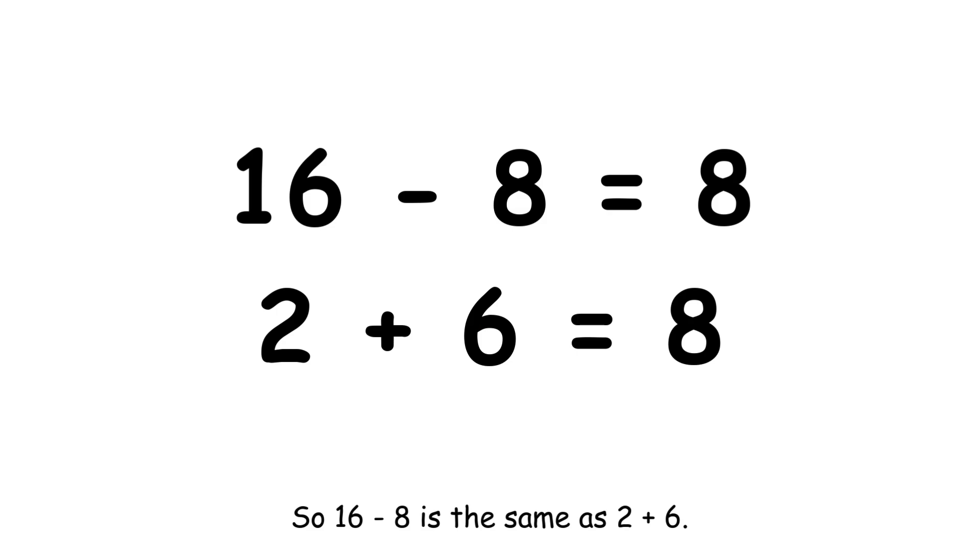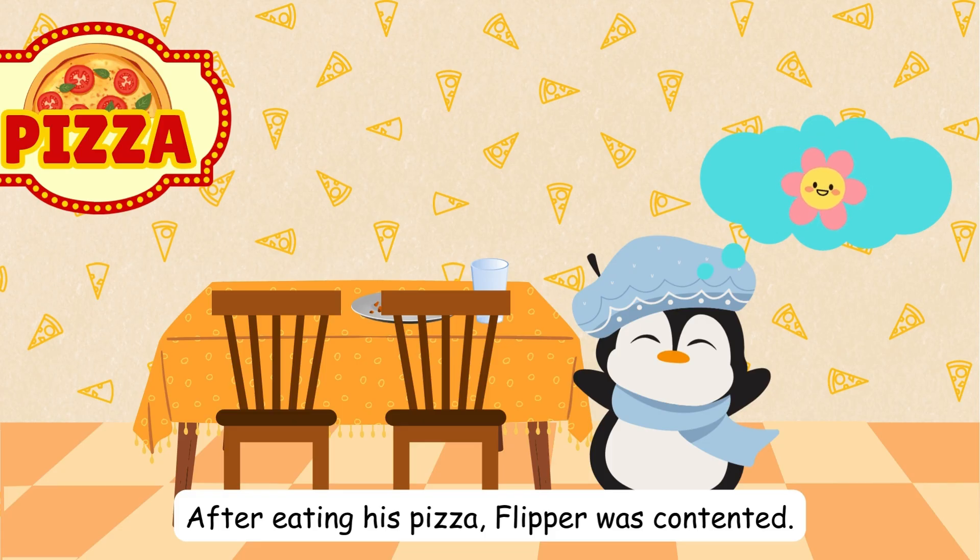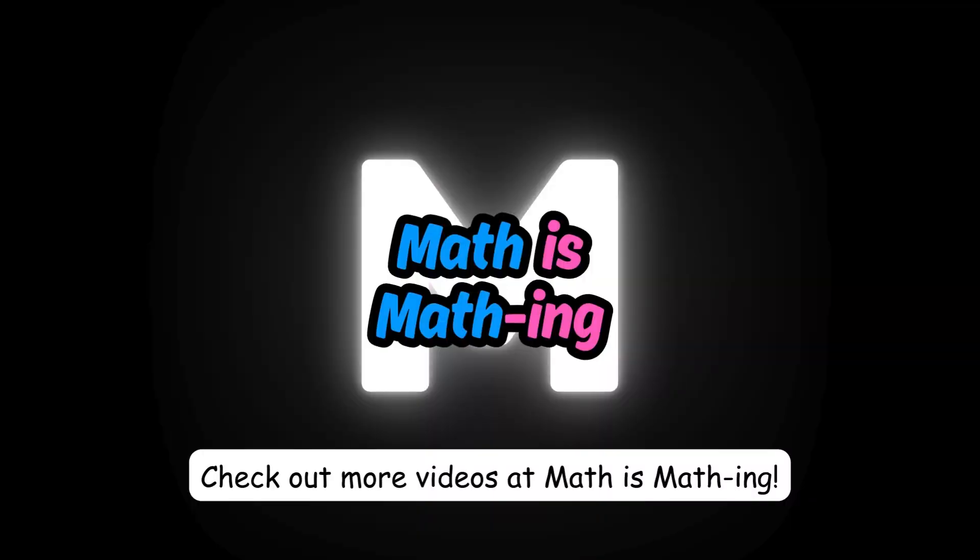So 16 minus 8 is the same as 2 plus 6. After eating his pizza, Flipper was contented. Check out more videos at Mavis Mavis.